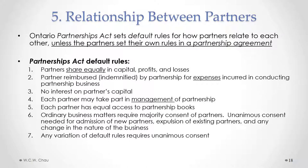Another rule that people often want to change is rule number six, which deals with how business decisions are made. The default rule is that ordinary business matters require the majority consent of the partners, and unanimous consent is needed for major decisions like admitting new partners, expelling existing partners, and any change in the nature of business. Quite often, for efficiency, you will want a different rule for day-to-day management decisions — perhaps giving one or two people the power to make those decisions instead of requiring majority consent of all partners.